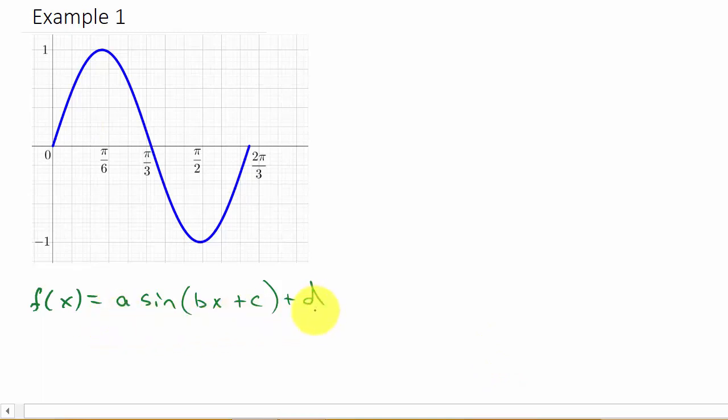We can see there's no horizontal shift because it starts here at zero. So that tells us that c is equal to zero. And then there's no vertical shift, so that tells us that d is equal to zero.